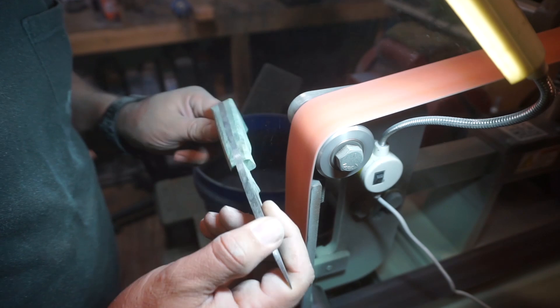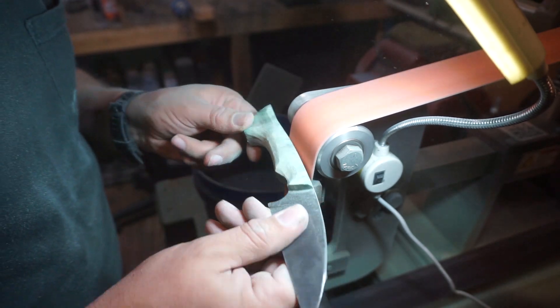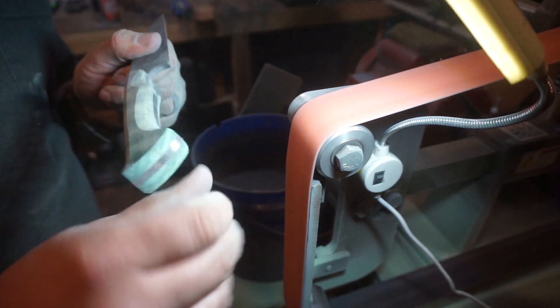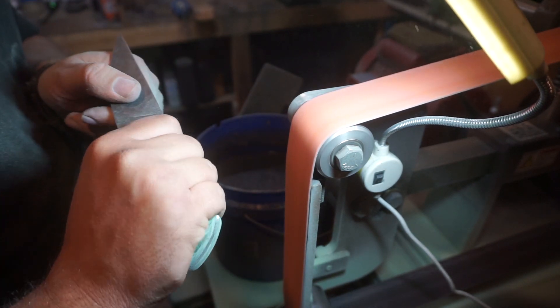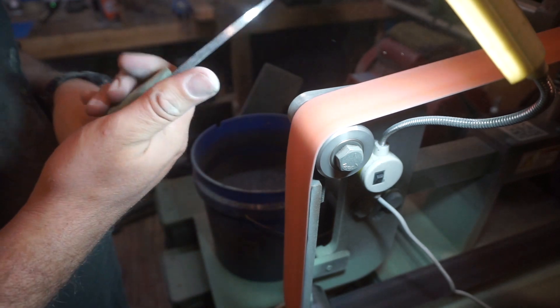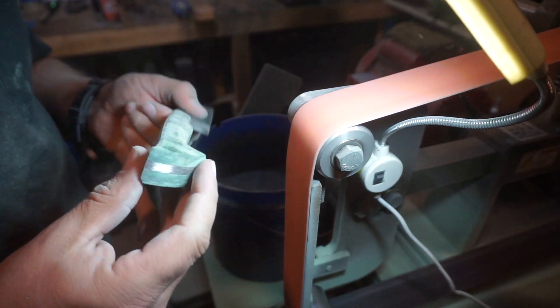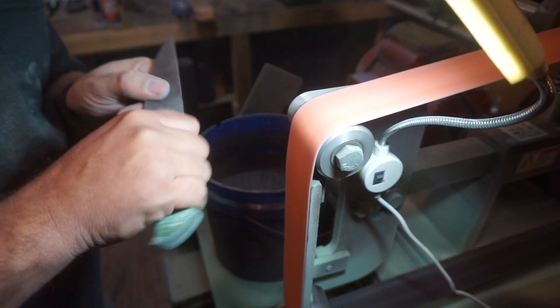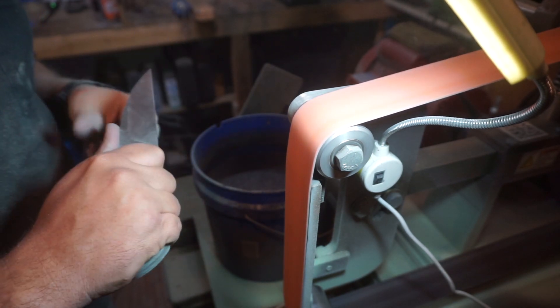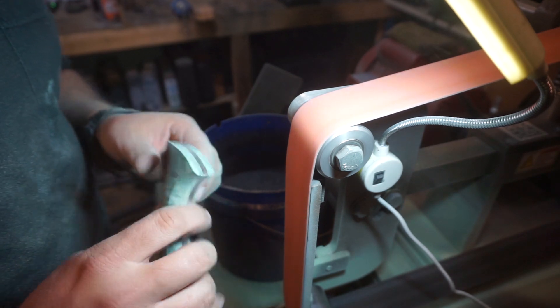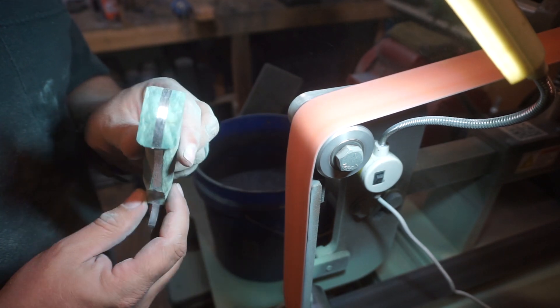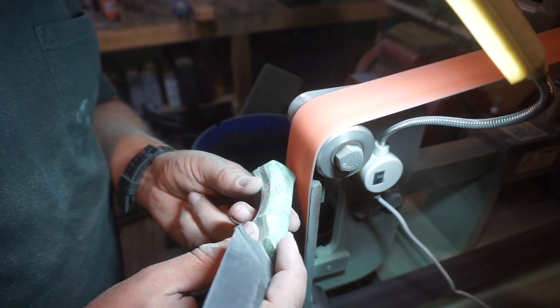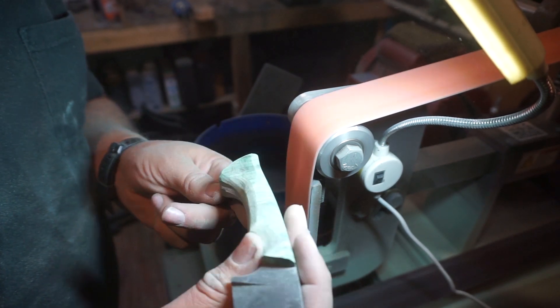Typically what I'll do is I'll use a 36 grit belt, like what I'm using right now, and I'll actually contour this to about 90 percent done. Then I'll switch to other sanders and hand sanding. But I go through and just make sure that everything is positioned where it needs to be, every contour is where it needs to be, so that all I have to do is smooth out the lines with the other sanders.